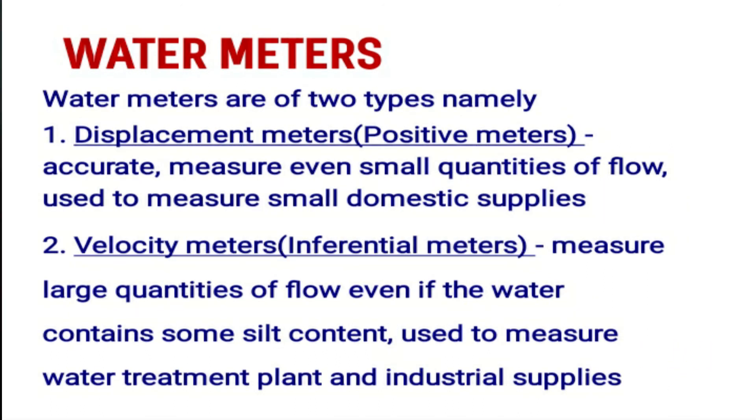Water meters are of two types: displacement meters and velocity meters. Displacement meters, also called positive meters, are accurate and are installed for domestic supplies. Velocity meters, also called inferential meters, are used to measure large quantities of water flow and are installed at water treatment plants and for industrial supplies.